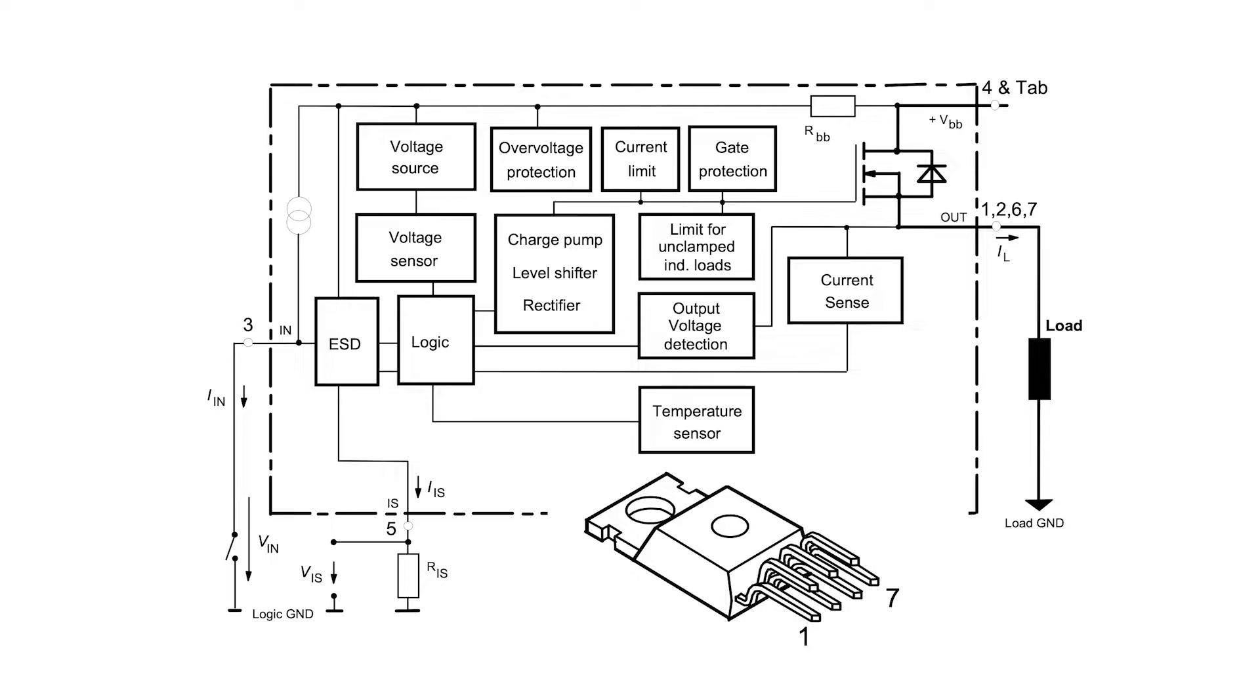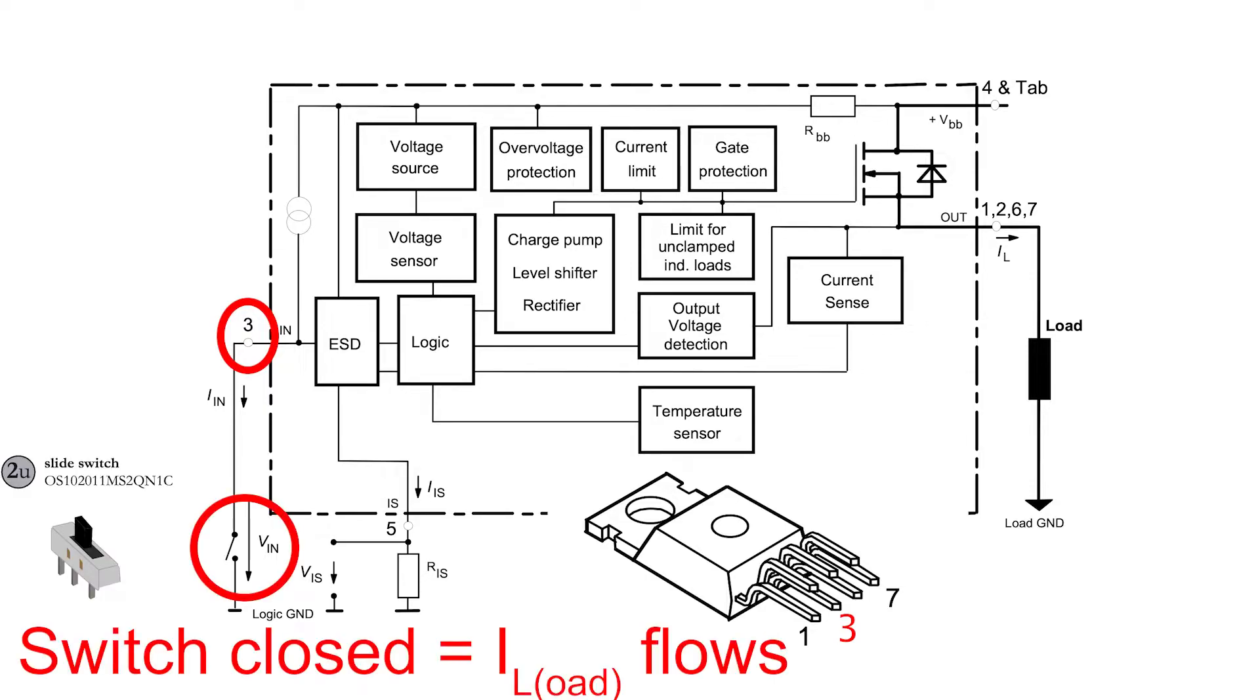The transistor can be switched on when a small current is able to flow between pin 3 and the ground. You do this by placing a small slide switch. When you switch off the slide switch, the voltage between pin 3 and the ground almost equals the battery voltage and the transistor blocks the load current.